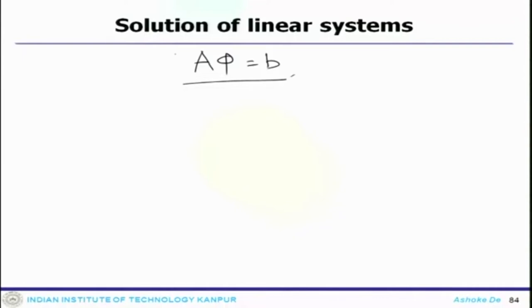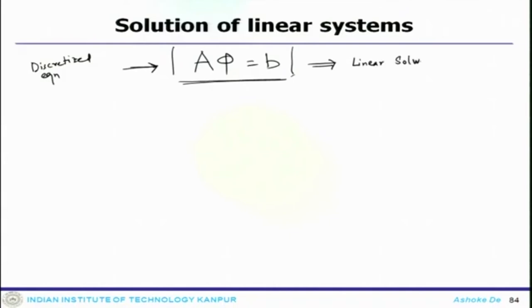Now we are discussing the solution of the linear system. There are different approaches: direct approaches and iterative processes. The key component of the linear system is the matrix A. We have so far discussed the matrix, its vectors, norms, certain properties, and some theorems. Today we discuss the solution procedure. The linear system comes from the discretized equations, and we need different linear solvers — either a direct approach or an iterative approach.